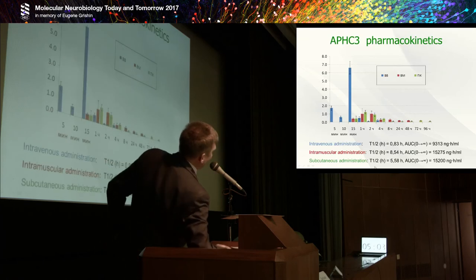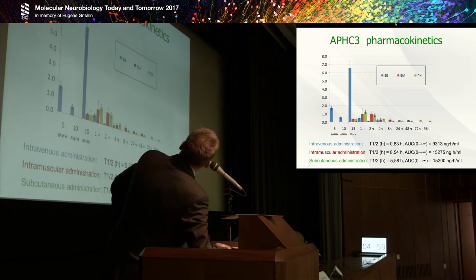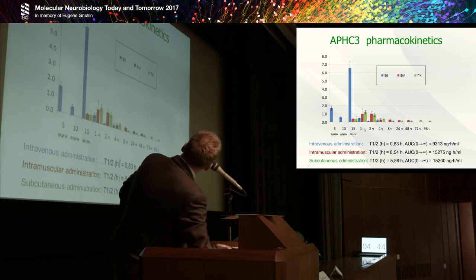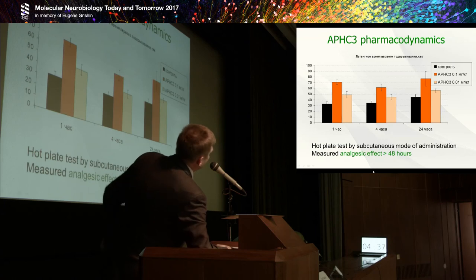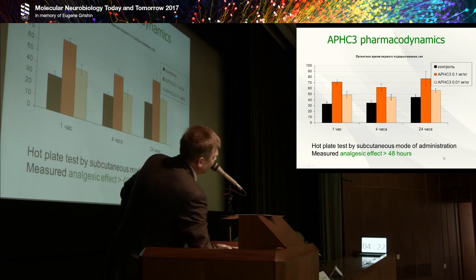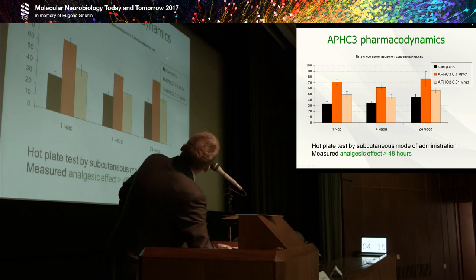But what about our peptides — how stable are they? In the pharmacokinetic experiment, we found that up to three days we can find traces of the peptides in the blood, especially when using subcutaneous administration. Not only stable, but effective: this peptide was effective for one day, and statistically significant differences were found about two days after application of APHC3 in the dose of 0.1 milligram per kilogram.